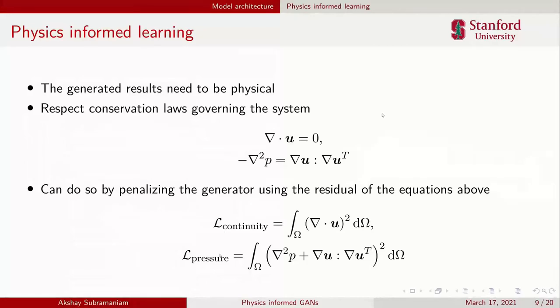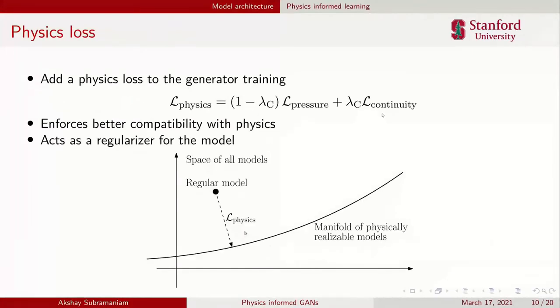You're penalizing the generator for not satisfying physics. You can think of this in a couple different ways. The most intuitive way to think of this is as a regularizer. If you have a space of all possible models and a manifold in that space is the manifold of physically realizable models, what you're doing with these physics losses is to pull that model down to this manifold so you're respecting the governing equations.